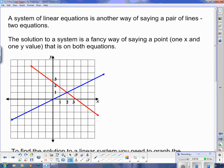So a system of linear equations is another way of saying a pair of lines. Now we have two equations, and the solution to a system is a fancy way of saying a point, one x and one y, that is in both equations.